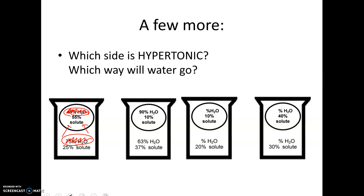Technically, the reason water goes towards the hypertonic side is because there's less water on that side. In scenario two, the outside has more solute, so outside is hypertonic and inside is hypotonic — water goes out. In scenario three, there's 20% solute outside and 10% solute inside, so outside is hypertonic, inside is hypotonic, and water will go out. If we verify: outside would be 80% water and inside 90% water — water goes from where there's more water to where there's less.